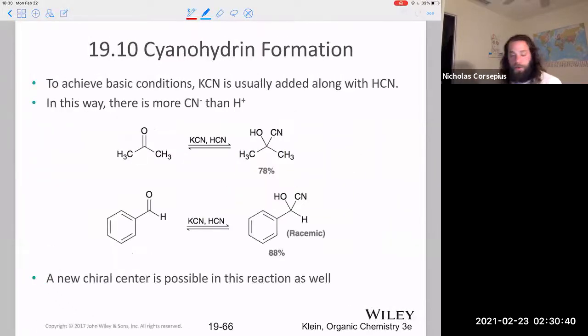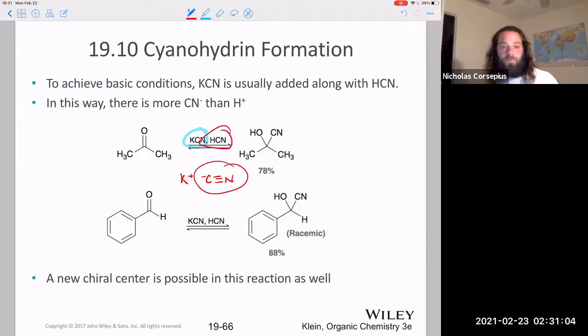Because you need to keep this at basic conditions, you never just use HCN by itself. You also use potassium cyanide or just another salt. So this is just potassium salt with cyanide ion. That by using this mixture ensures that you have a lot of the nucleophilic species, but also your source of proton as well.